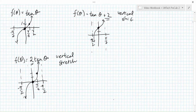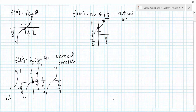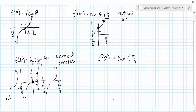That makes a full period. Then we can make as many more of these as we want, repeating every π since π is the period. Now let's consider the function f(θ) = tan(π/3 · θ).